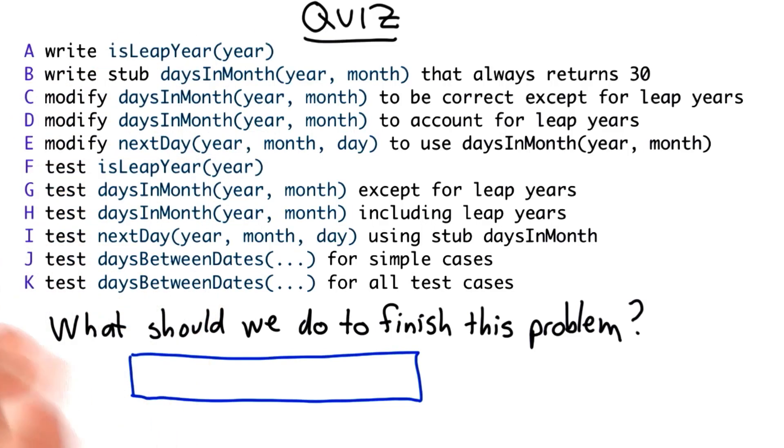So for this quiz, I want you to think carefully about a strategy that will be the most effective way to finish the problem. We've got a lot of different things we might do next. We don't necessarily need to do all of these, and the order in which we do them will make a big difference in how efficiently and correctly we solve the problem.